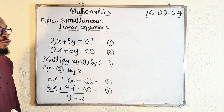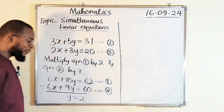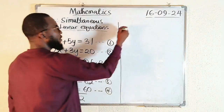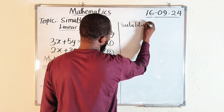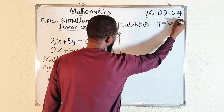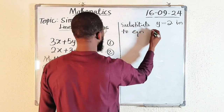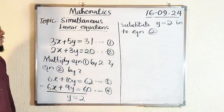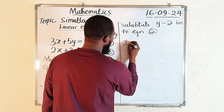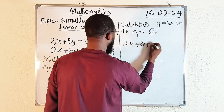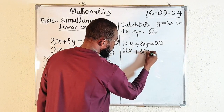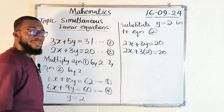Subtracting: 6x minus 6x is zero, so we have eliminated x. 10y minus 9y gives us y. 62 minus 60 equals 2, so y equals 2. Now to find x, we substitute y equals 2 into equation two. Wherever we have y in equation two, we replace it with 2.